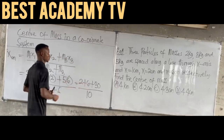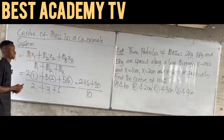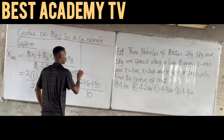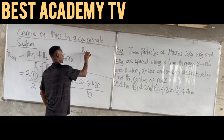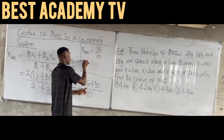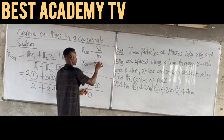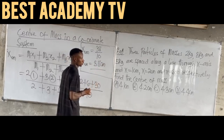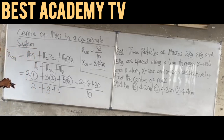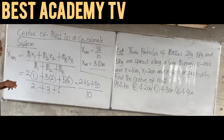So the numerator: 2 plus 6 plus 30 gives 38. Therefore S center of mass equals 38 over 10, which equals 3.8 cm. If this answer appears in the options you can choose it; if not, there may be a mistake somewhere. Please take note.